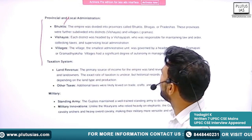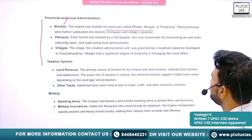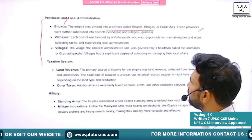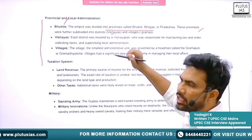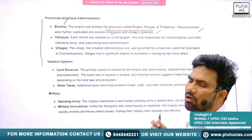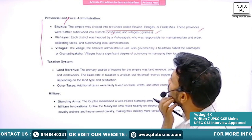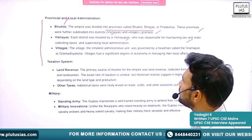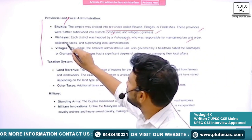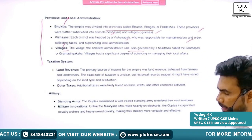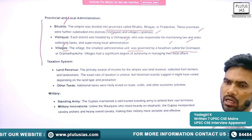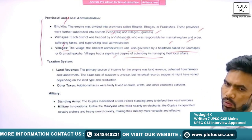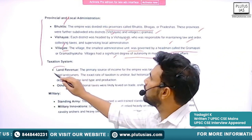In provincial and local administration, provinces were known as Buktis, further divided into districts called Vishayas, and then villages called Gramas. Each district was headed by a Vishayapati, responsible for maintaining law and order, tax collection, and supervising local administration. Villages — the smallest administrative unit — were governed by a headman called Gramapati or Gramadyaksha, and villages had a significant degree of autonomy in managing their local affairs.